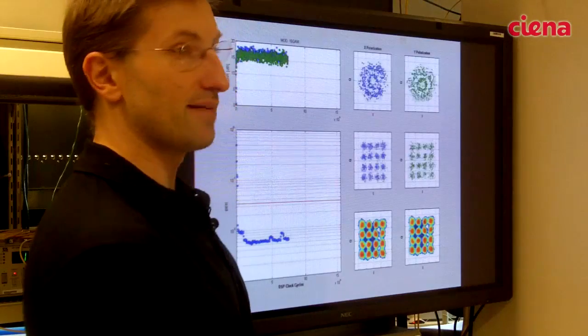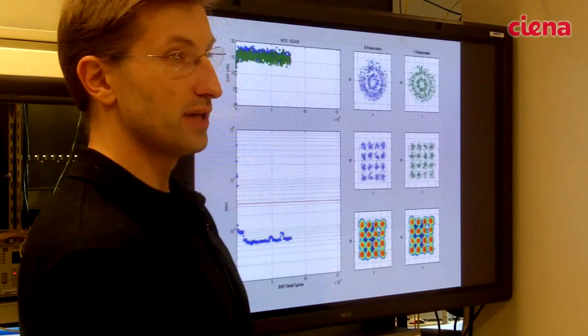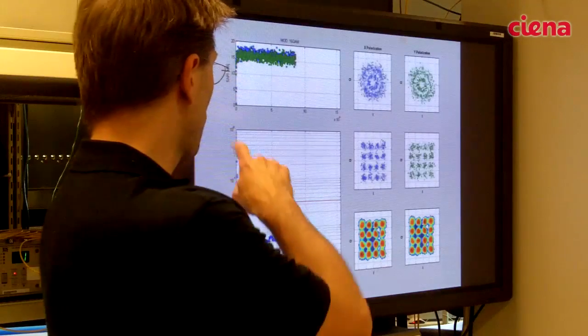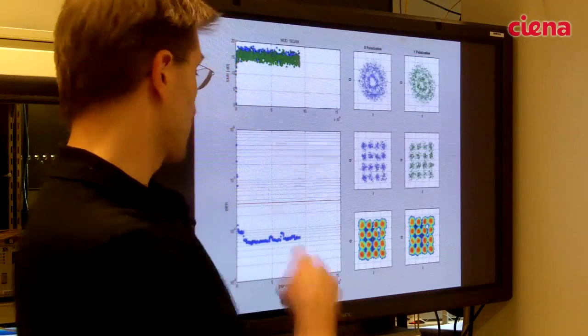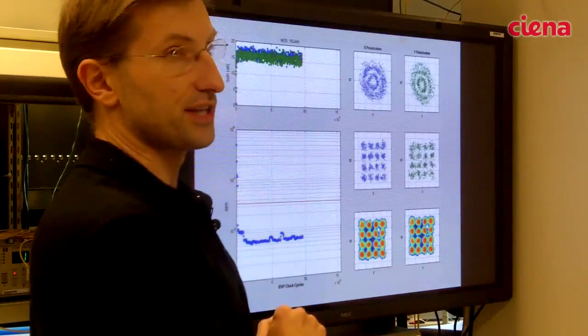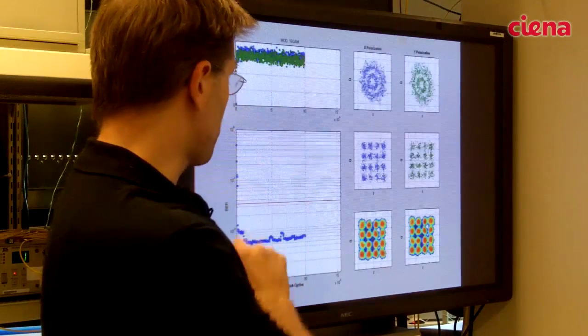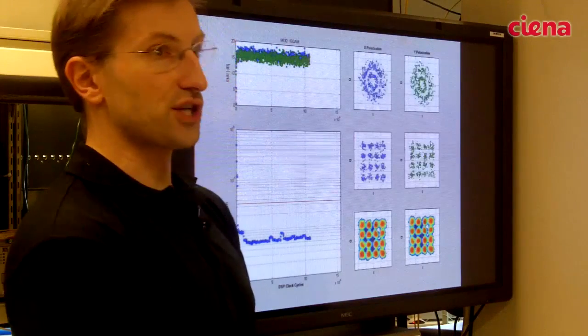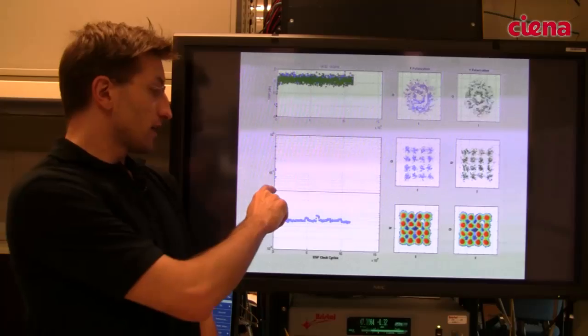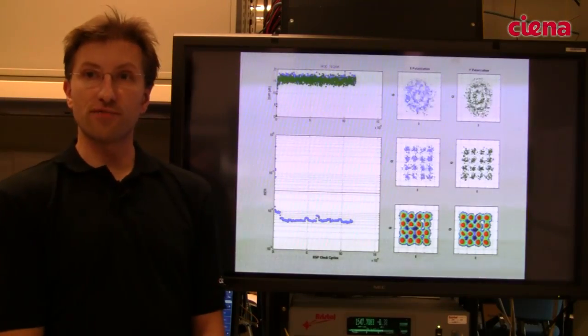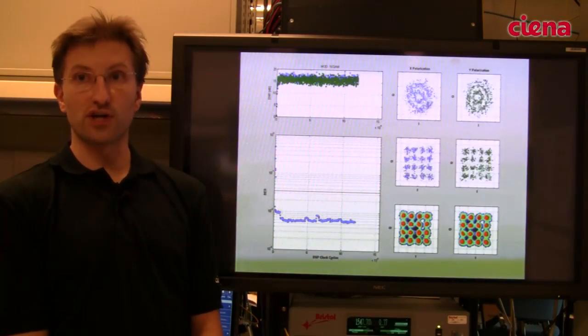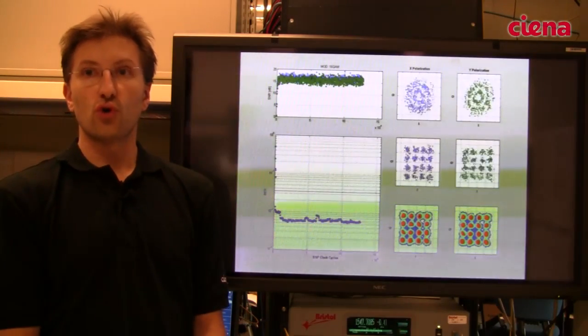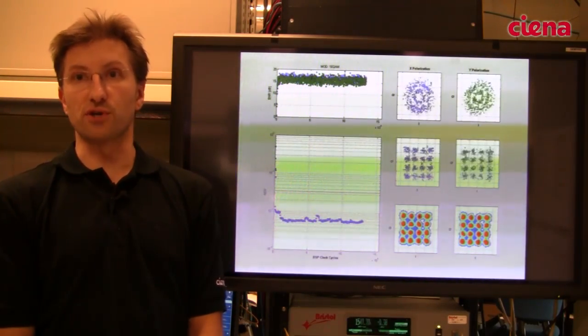And finally we have a view of the bit error ratio as the processing progresses. It starts with essentially 100% error ratio and with processing time and optimization we see the reduction in bit error ratio. The red line represents our soft FEC error threshold and hence anything below the FEC threshold will appear as error-free transmission on the client side.